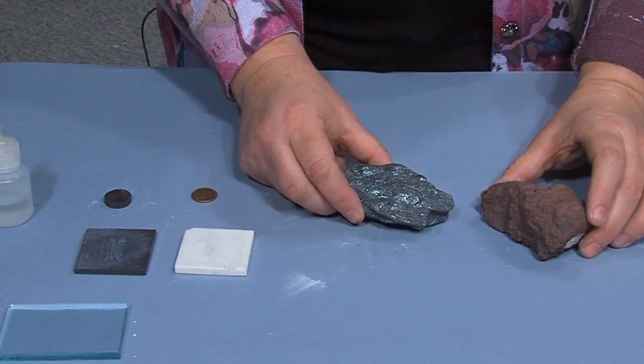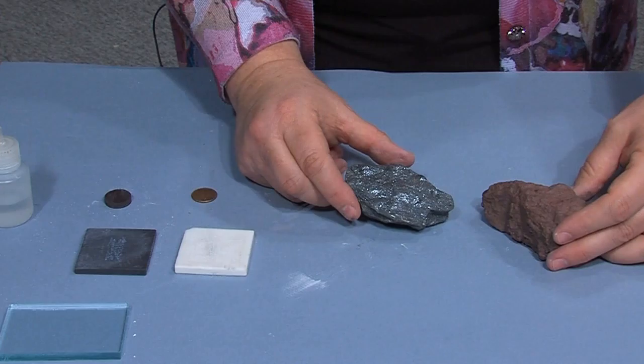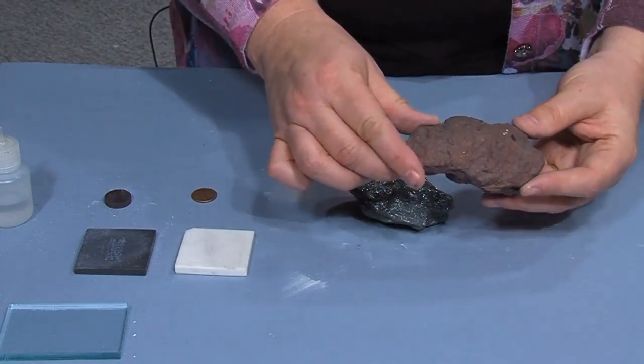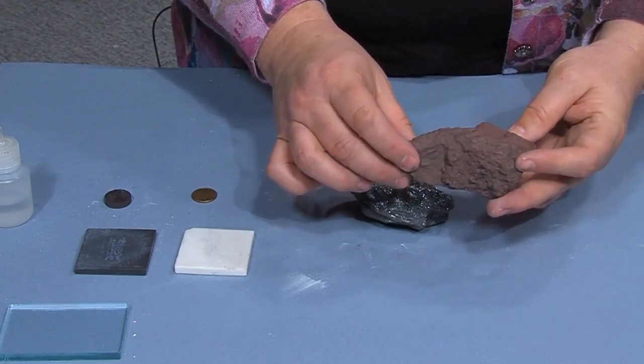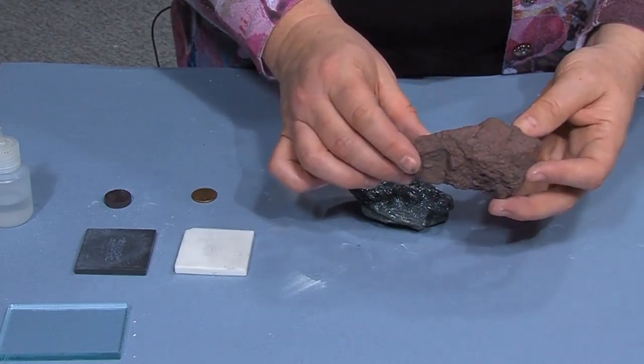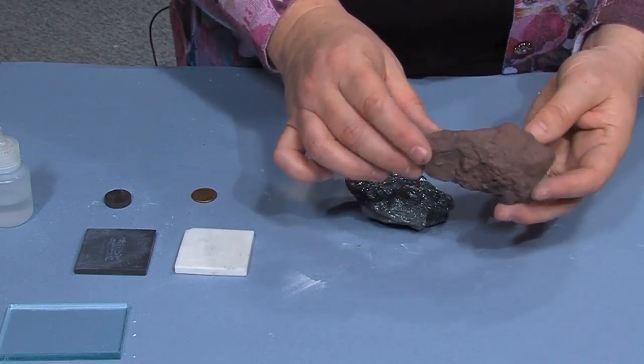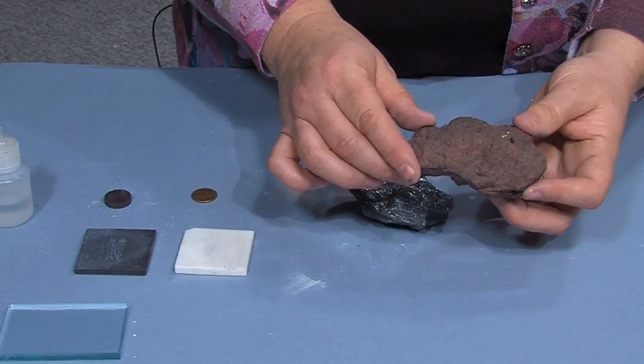And testing for luster, let's look at the one on your right. As we move this in the light, would you say that this sample is glassy? Is this one metallic, or is it dull and earthy?